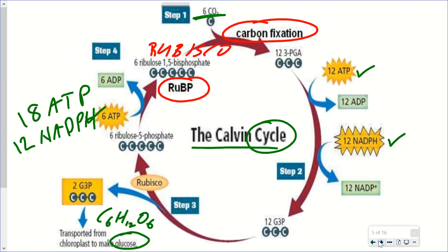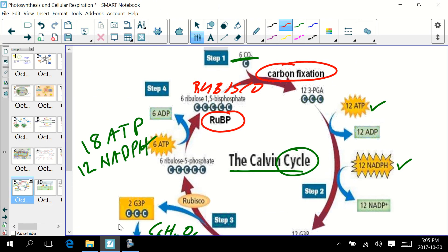Overall, those are the major details you need to know about the process of photosynthesis. Remember that in the light-dependent reaction, the plant makes the usable forms of energy — ATP and NADPH. Then in the light-independent reaction, or the Calvin cycle, it uses those two products of the light reaction along with carbon dioxide to make the storage form for the plant, which is glucose.